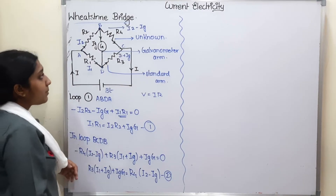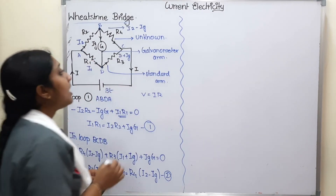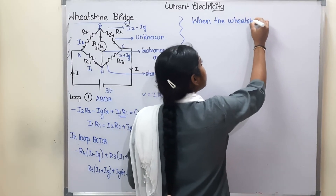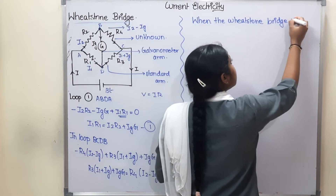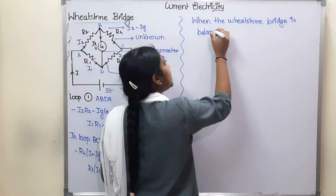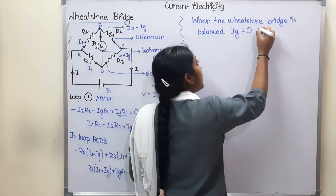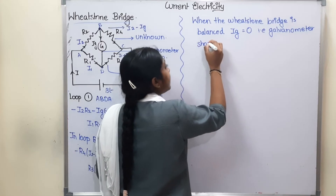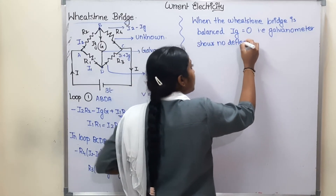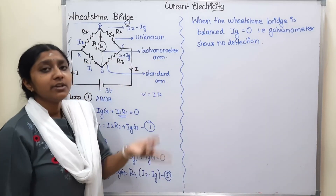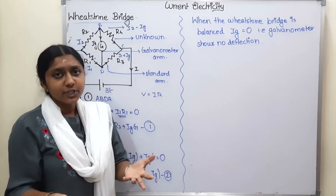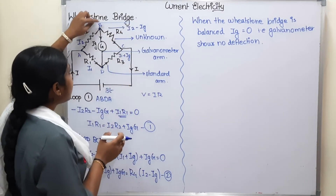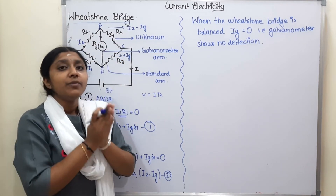Now the theorem for the Wheatstone Bridge: the condition when the Wheatstone bridge is in balanced condition. On the balanced condition, Ig is equal to 0. The galvanometer shows no deflection. So a Wheatstone bridge is balanced if there is no current through the galvanometer — the galvanometer shows no deflection and the bridge is balanced.